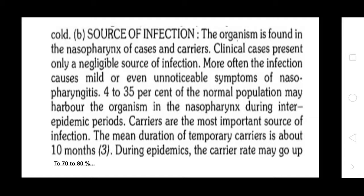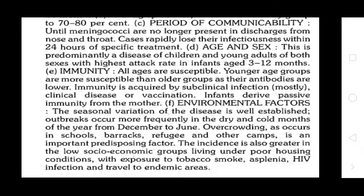Infection can cause mild or even unnoticeable symptoms such as nasopharyngitis. About 4–35% of the normal population may carry the organism in the nasopharynx during inter-epidemic periods. Carriers are the most important source of infection. The mean duration of temporary carriage is about 10 months. During epidemics, carrier rates may go up to 70–80%.